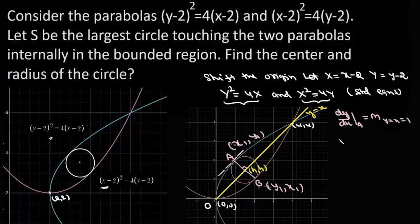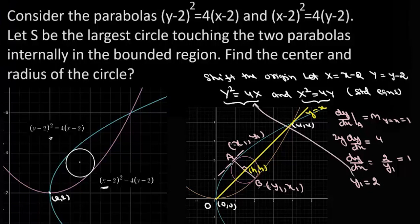So we differentiate and get 2y dy/dx = 4, so dy/dx = 2/y₁, and this equals 1. So from here we get y₁ = 2.